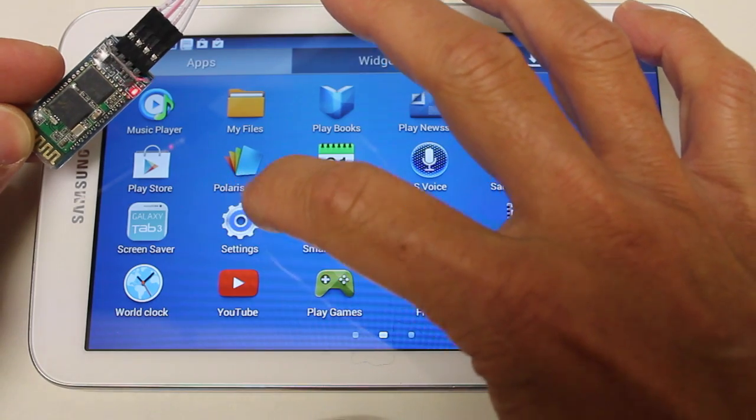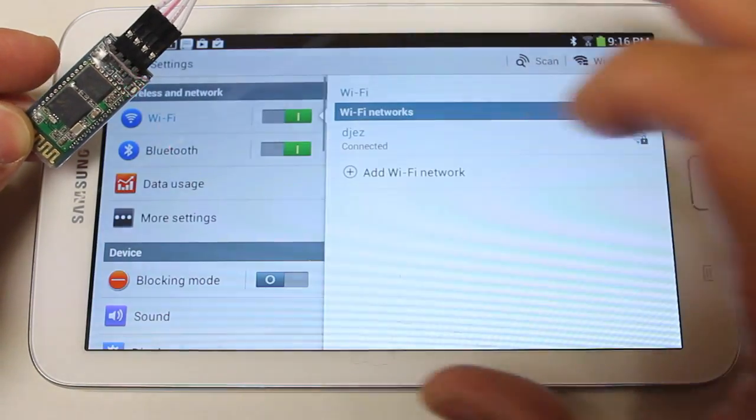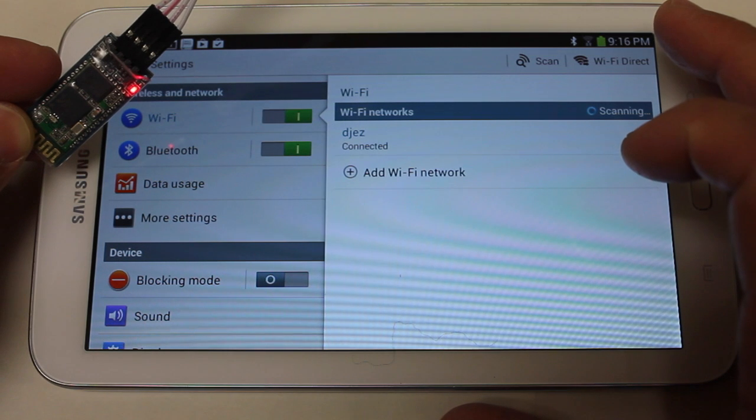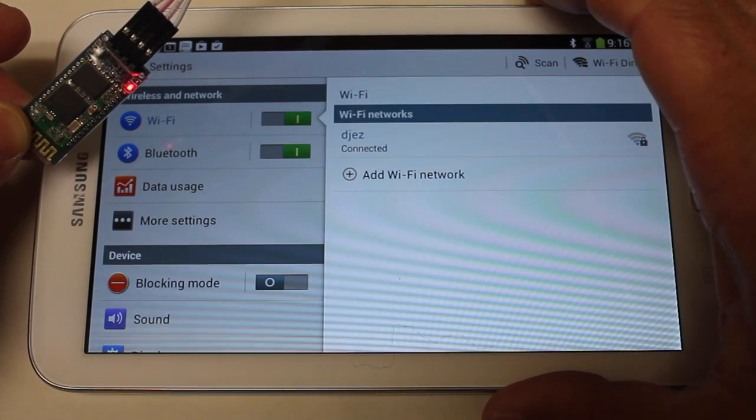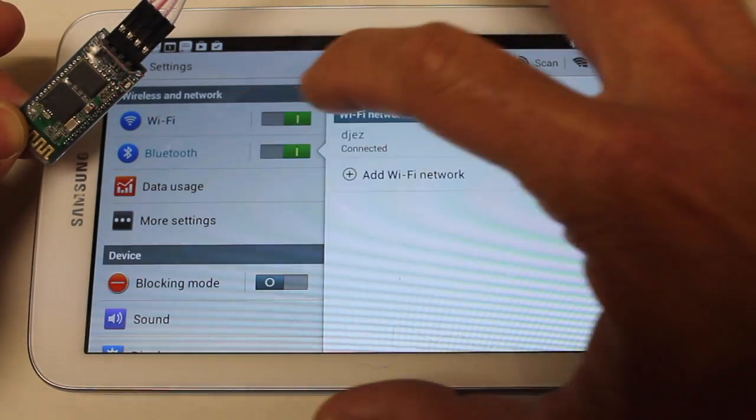And you can also set the pin code on this thing if you want. By default it's 1234, and I left that alone. But there's an AT plus PIN, and then you can enter your four-digit pin, and it'll reconfigure from the default.